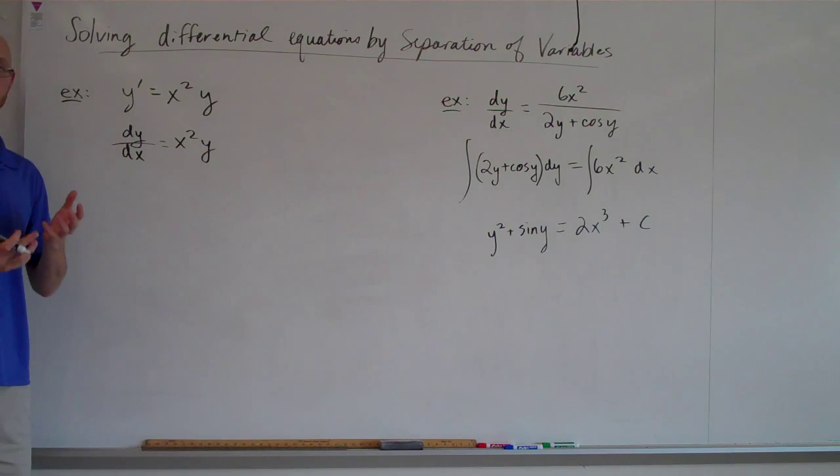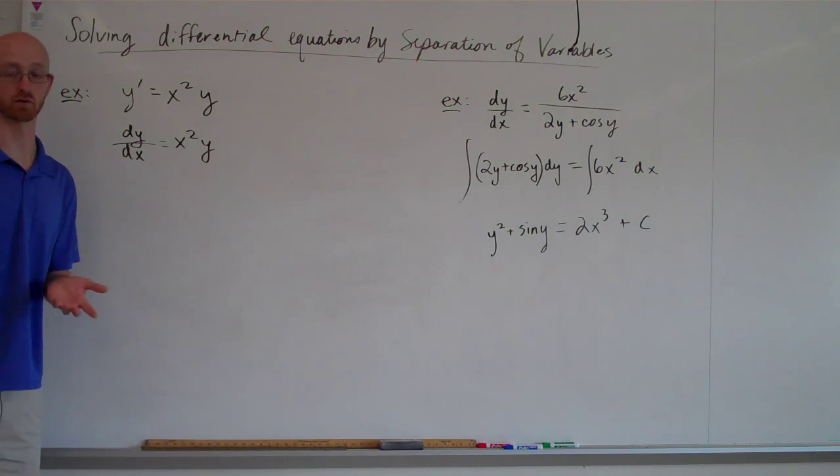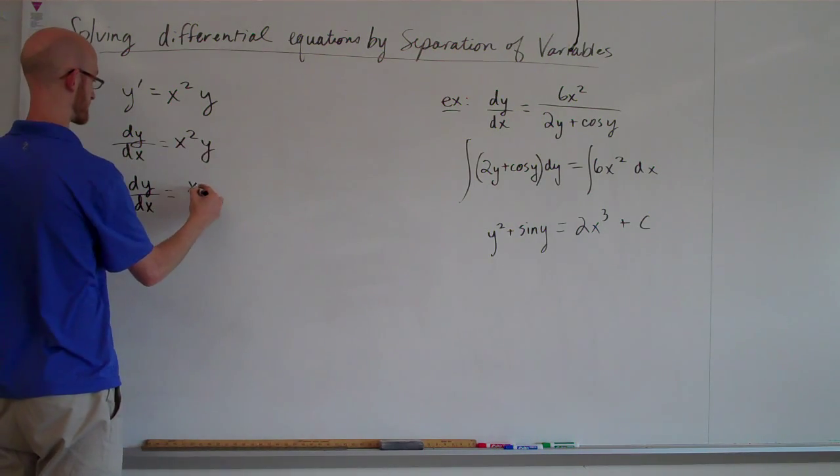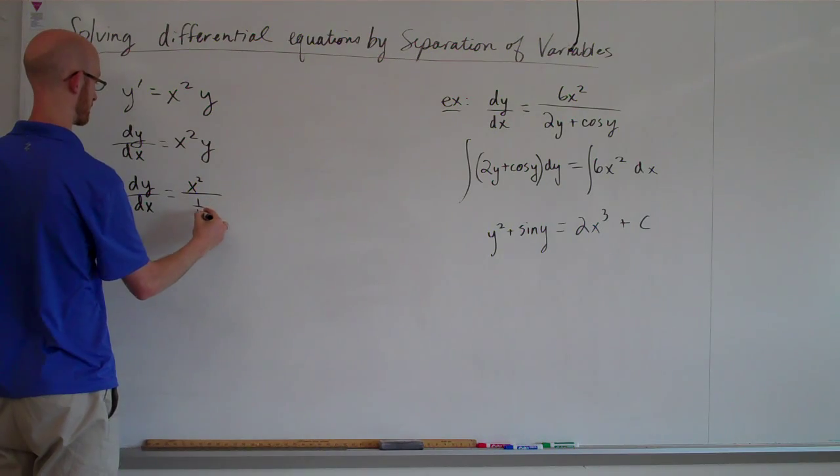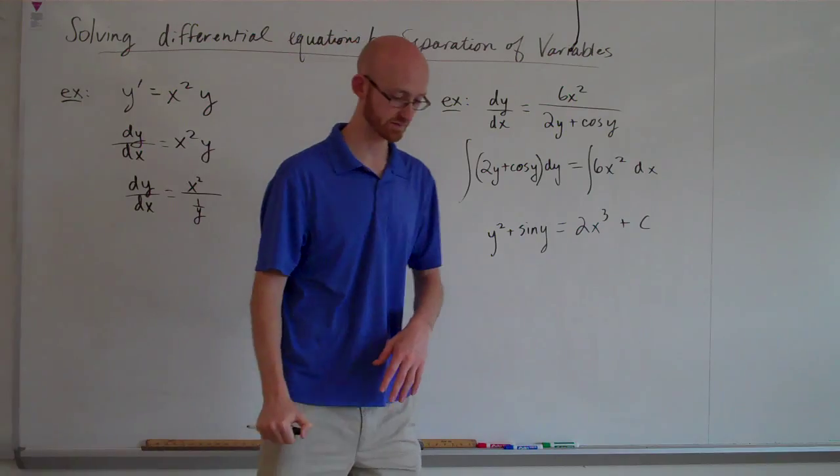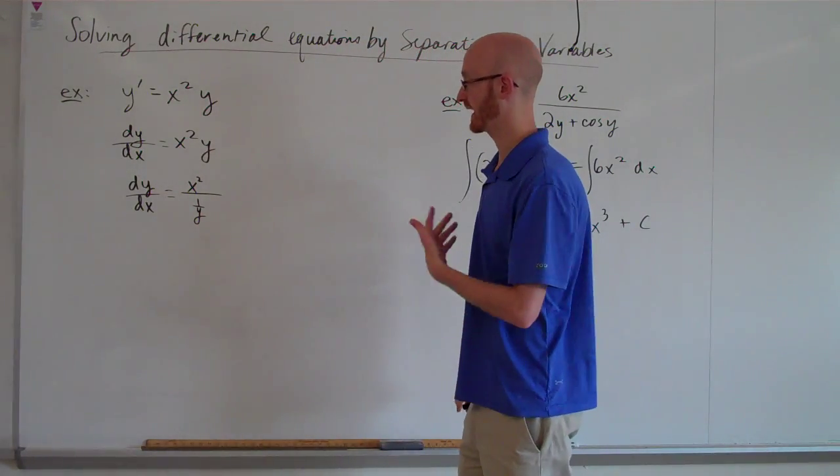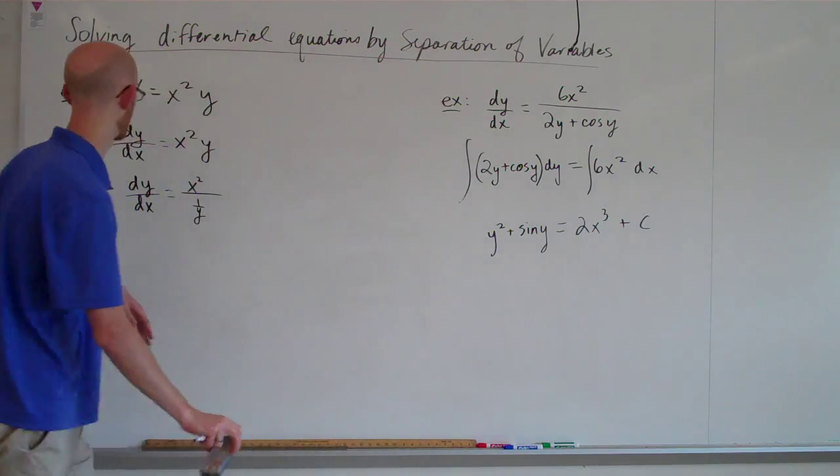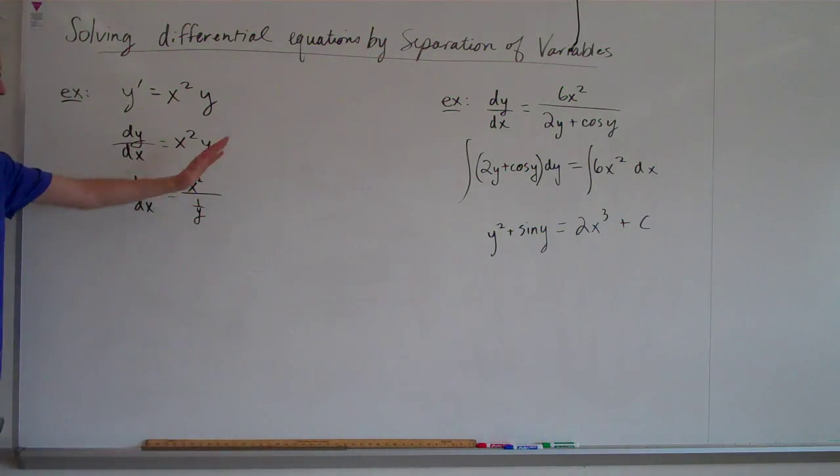Secondly, I want these variables to be separable. So what I'm going to do is rephrase the problem in the following way. I'm going to call it x squared over 1 over y. You don't have to do that, I'm just giving you one approach.